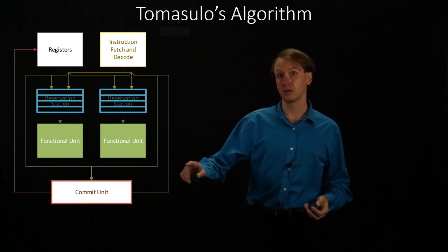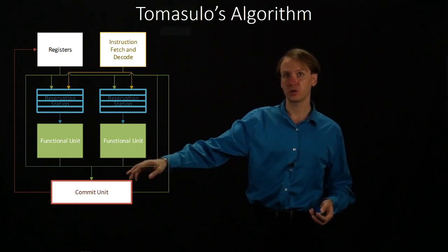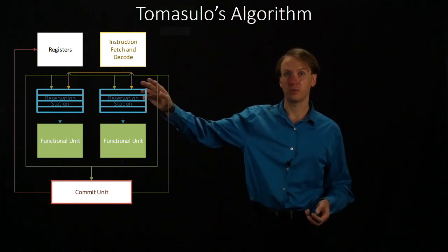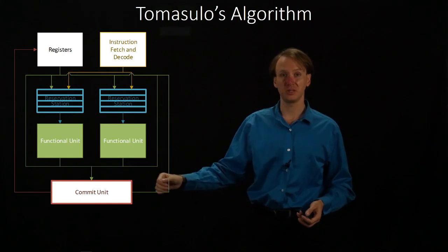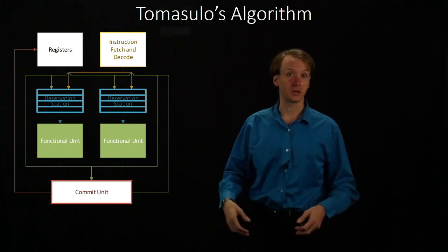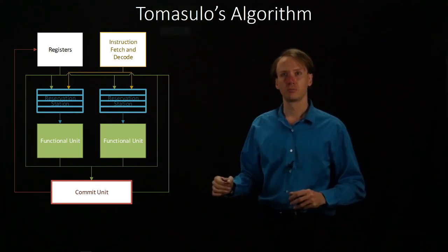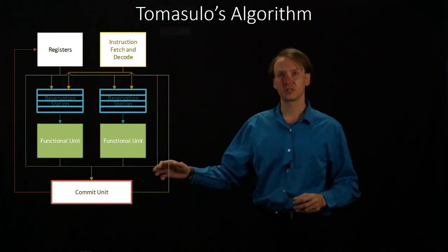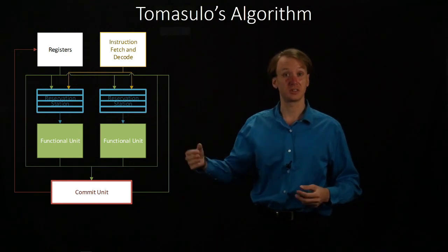When the functional unit is done, it will take that result and put it out on the data bus. That will go off to the commit unit and be committed in time, but it will also be sent to all of the other reservation stations in the system.